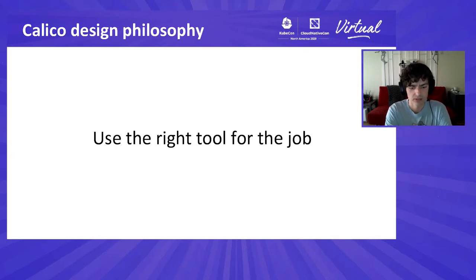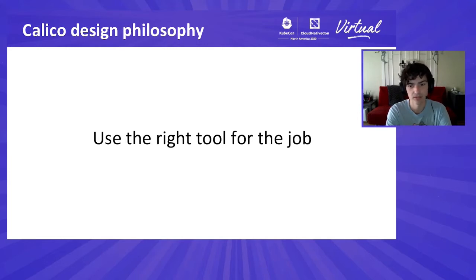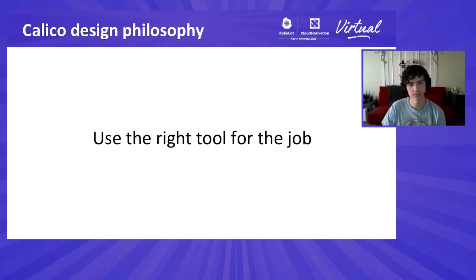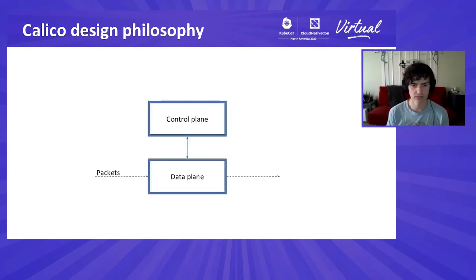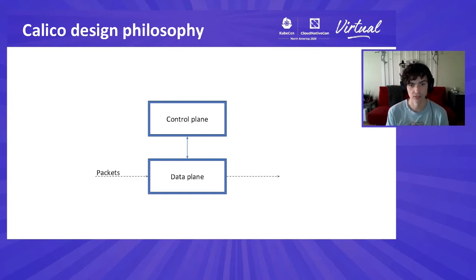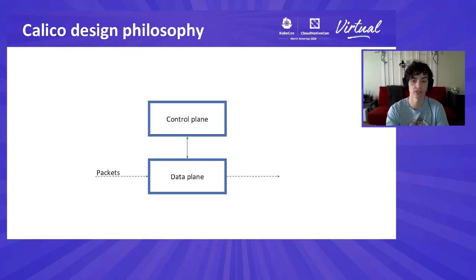So what we want to do with Calico is to make sure the design of the software enables using the right technology to solve the diverse problems that our users have. This mindset shows itself in Calico in many ways: we've got multiple built-in networking techniques using IPIP, VXLAN, and unencapsulated BGP, as well as compatibility with a wide array of third-party CNI plugins. But the main design decision I wanted to talk about today is the separation of control plane functions and data plane functions.